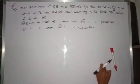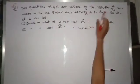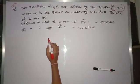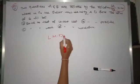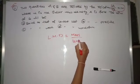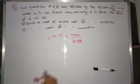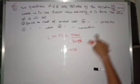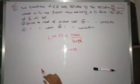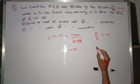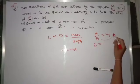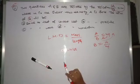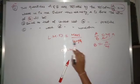Coming to the next question: two quantities A and B are related by A/B = M, where M is the linear mass density. Linear mass density is given by mass per length. A is force, which equals mass times acceleration. We need to find the dimensional formula for B, so rearranging: B = A/M.